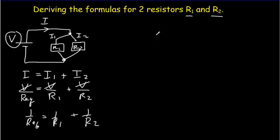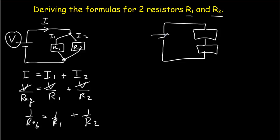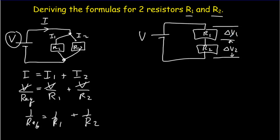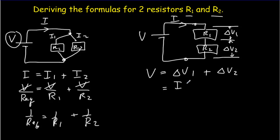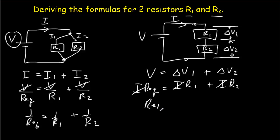Similarly, in series, the circuit has voltage V across R1 and R2 in series, giving voltage drops ΔV1 and ΔV2 across each resistor. By conservation of energy, V equals ΔV1 plus ΔV2. Using Ohm's law, it's the same current through the entire circuit, so ΔV1 equals I times R1 and ΔV2 equals I times R2. By the definition of equivalent resistance, V equals I times R-equivalent. Cancelling all the I's gives the formula for equivalent resistance in series: R-equivalent equals R1 plus R2.